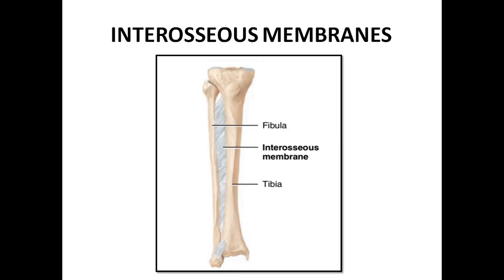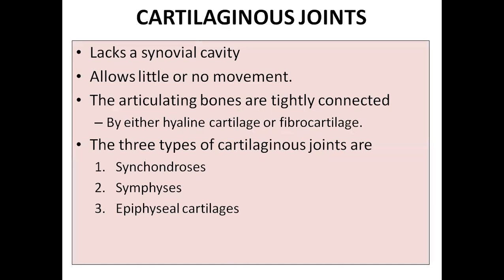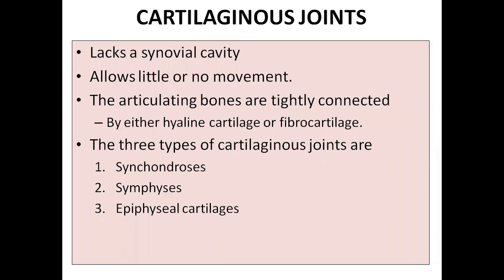The next type of joint is cartilaginous joint. Cartilaginous joints have little or no movement. There are two types of cartilage: hyaline cartilage or fibrocartilage. They keep the bone tightly connected. Again, three types are there: synchondrosis, symphysis, and epiphysis.